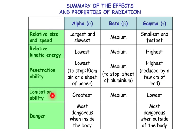Now, ionization ability is the ability to knock electrons off atoms. Alpha is very, very ionizing. Whereas gamma is weakly ionizing.